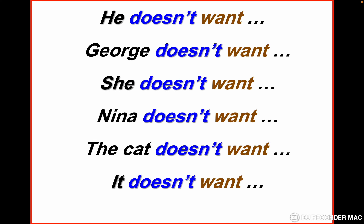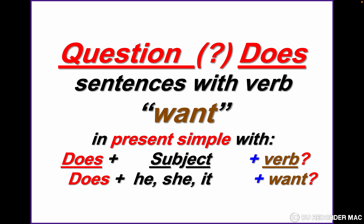Let's go to the question form. The rule is: 'does' plus subject plus verb. Does he want? Does she want? Does it want? The verb is without 's' even if it is with he, she, or it, because we have 'does'. In the negative form and in the question form, the verb is without 's'.